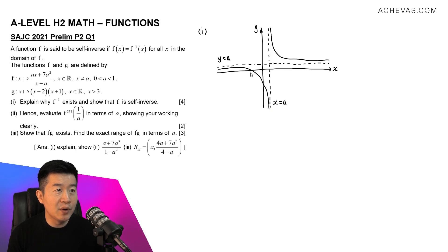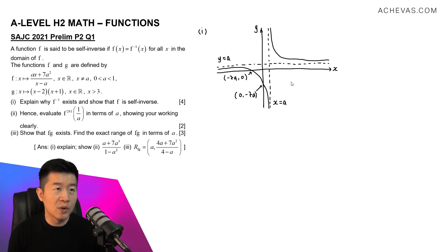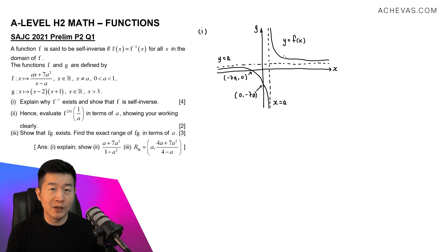The coordinates of the x-intercept — if I let y equal 0, I get x equal to minus 7a, so the coordinates are (−7a, 0). As for the y-intercept, letting x equal 0 gives y equal to negative 7a, so the point is (0, −7a). So this is the graph of y equals f(x).